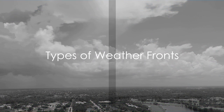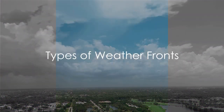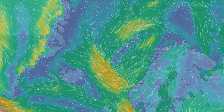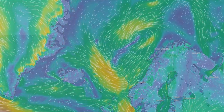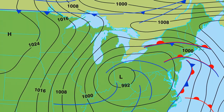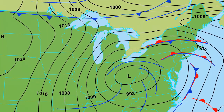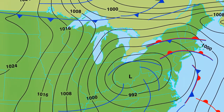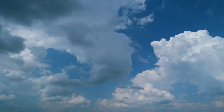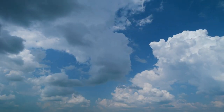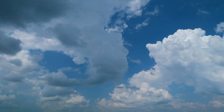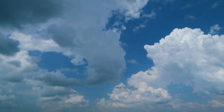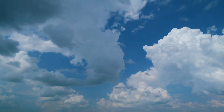There are four main types of fronts: cold, warm, stationary, and occluded. Each type has its unique characteristics and effects on the weather. Cold fronts form when a cold air mass pushes into a region occupied by a warmer air mass. This abrupt collision often results in the formation of cumulonimbus clouds, leading to short, intense periods of rain, thunderstorms, or even hail.